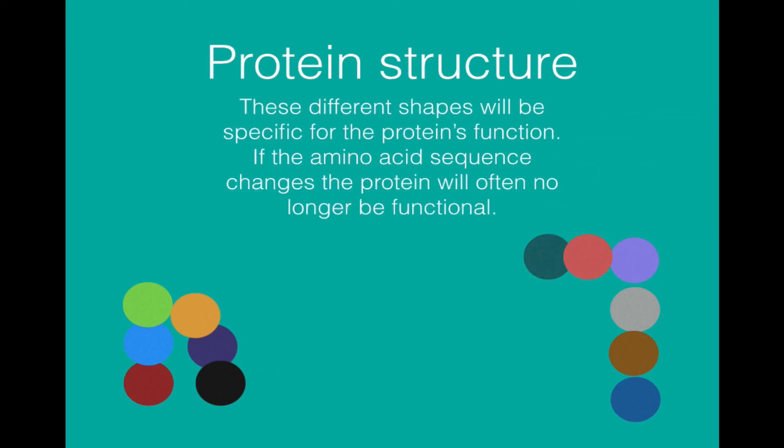Those different shapes are specific for the protein's function. If the amino acid sequence changes in any way the protein will often no longer be functional. Which is how mutations can affect the function of the proteins inside the cell and why genetic diseases can cause genetic diseases.